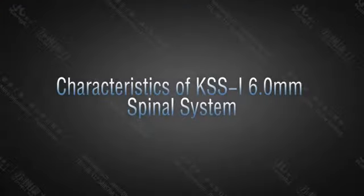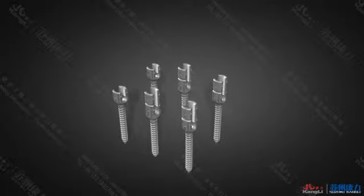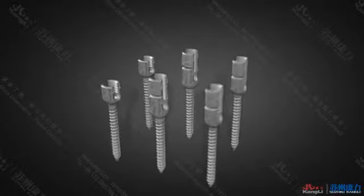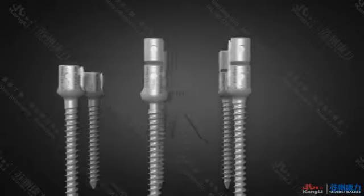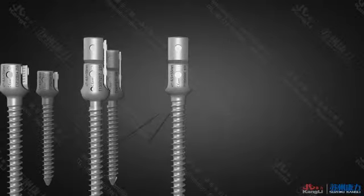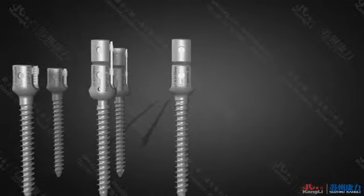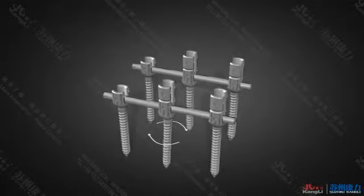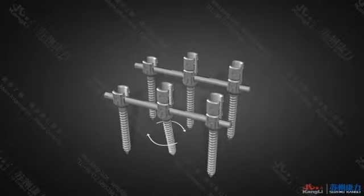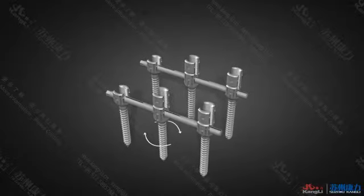Characteristics of KSS I 6.0 millimeter spinal system: multiple choices of screws meet various demands in different clinical practices. The head of the multiple axle screw can rotate 23 degrees in any direction.